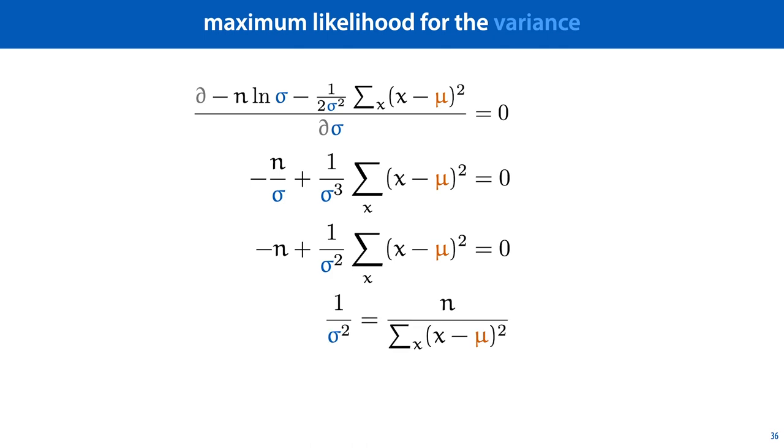And after rearranging a little bit, we find that 1 over sigma squared is equal to n over the sum over squared errors, and taking the inverse, we find that sigma squared, the variance, is equal to the average value of our squared errors. And if we take the square root on both sides, we get an estimator for the standard deviation instead of the variance.